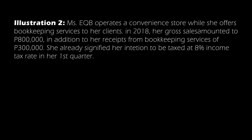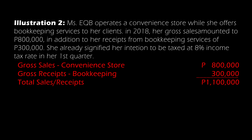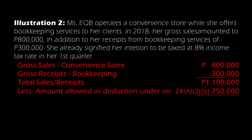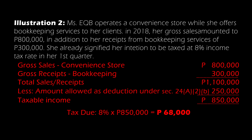For our second illustration, we compute income tax as follows: gross sales from a convenience store plus gross receipts from bookkeeping, less the ₱250,000 deduction allowed under Section 24A, gives us the taxable income. The taxpayer signified her intention to be taxed at the 8% income tax rate, so we have taxable income of ₱850,000 multiplied by 8%, giving a tax due of ₱68,000. This is in lieu of the graduated income tax rate and percentage tax by express provision of the law.